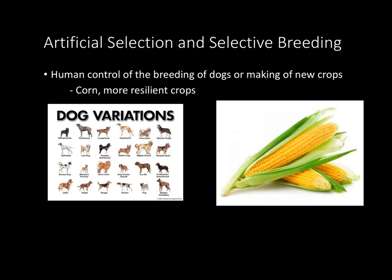Artificial selection and selective breeding — two good examples are breeding dogs and creating different variations of crops such as corn. This can be understood as human control of breeding. With dogs, humans pick certain characteristics they want and breed intentionally for that purpose. With crops like corn, we genetically modify the genes of plants to make them have more kernels and grow faster in different environments — that's selective breeding and artificial selection.